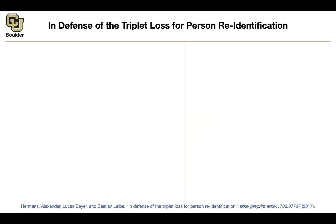We are revisiting triplet loss, which has some downsides. One of them is that it takes a long time to converge, which is why you need to do hard example mining. If you keep showing easy or common examples, the algorithm will learn them but then saturate until a hard example is shown. It has to wait in a random fashion to see a hard example to adjust its parameters. Hard example mining is therefore a necessary component.